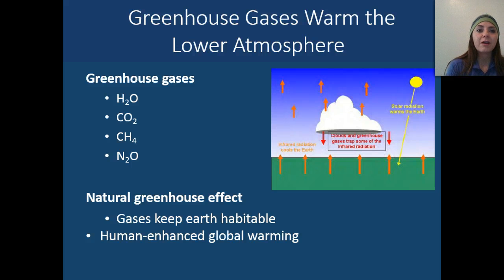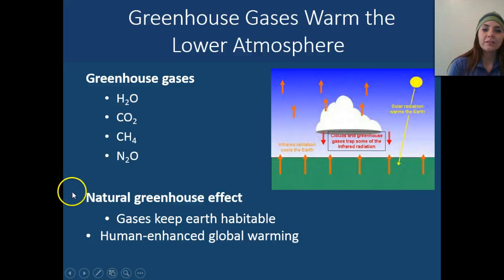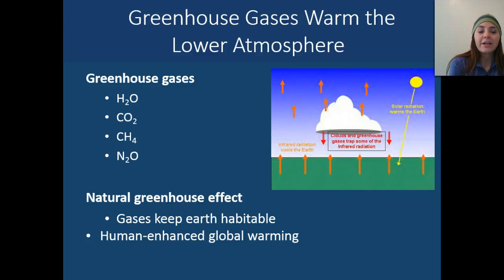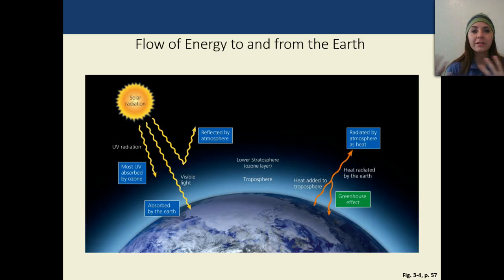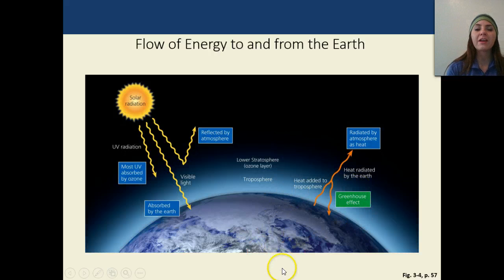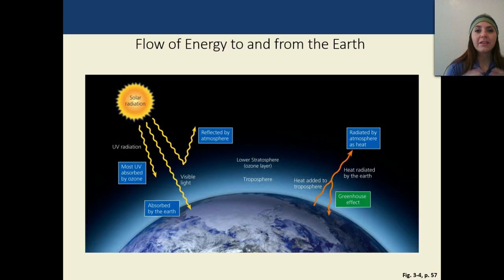Greenhouse gases also affect our temperatures and climates by warming the lower atmosphere. The most common one you hear about is carbon dioxide. These natural greenhouse gases create a natural greenhouse effect that helps keep Earth habitable. However, human contributions are increasing the rate at which Earth is warming and contributing to global warming. Some radiation from Earth gets reflected back into space, some gets absorbed, and during the enhanced greenhouse effect, less heat escapes — we keep more heat in the atmosphere rather than releasing it.